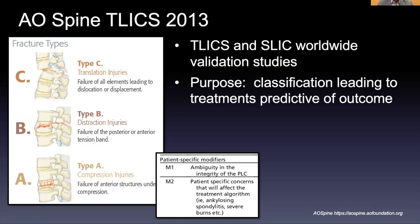Broadly speaking, there are three different types of thoracolumbar fractures on the AO spine criteria. Type A are compression injuries involving only the anterior column, generally not involving the middle or posterior column significantly. Type B are distraction injuries, which by definition must involve the posterior column or disruption of the posterior tension band. Type C are fracture-dislocation type injuries — the worst of the worst — always unstable and always requiring surgical intervention.